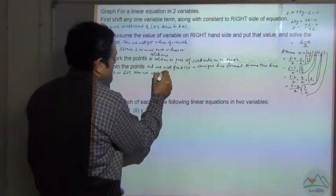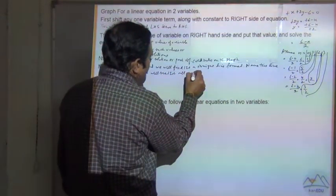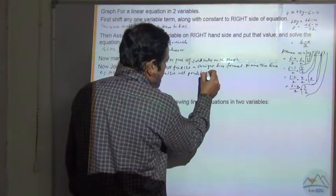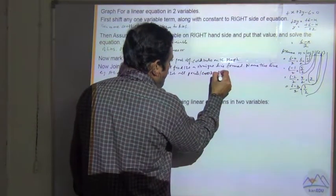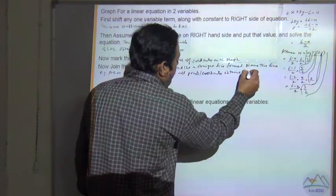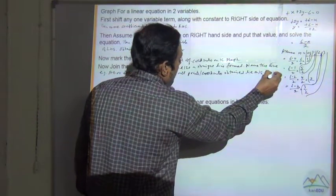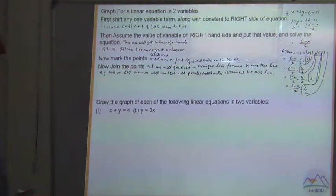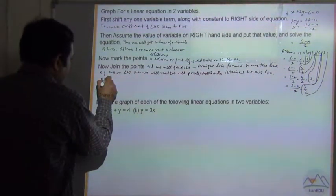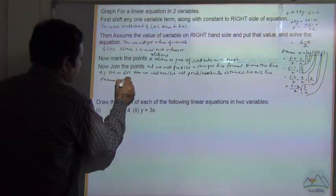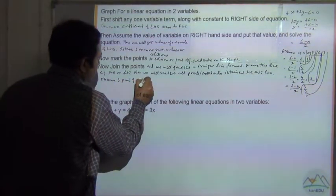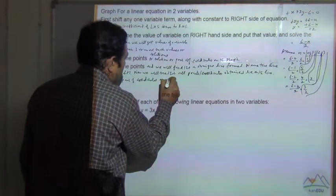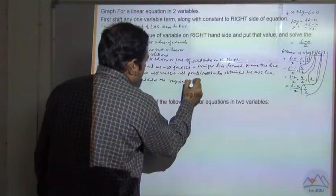We will see that all points or coordinates obtained lie on the line. So all the coordinates will lie on the line and it will be a straight line. A minimum of 3 pairs of coordinates are required to draw the graph.